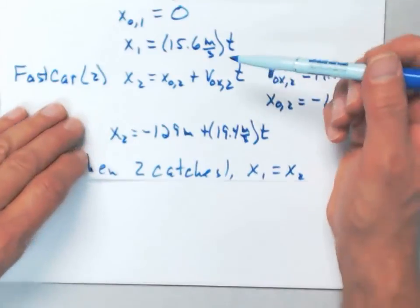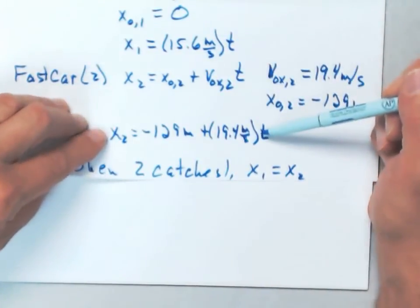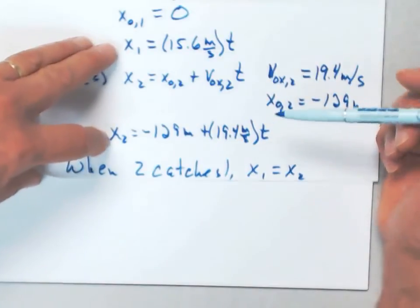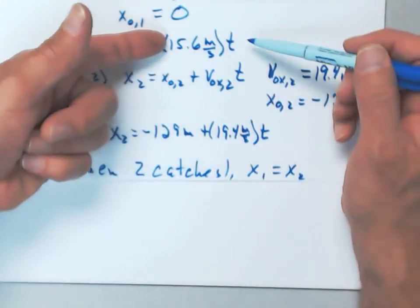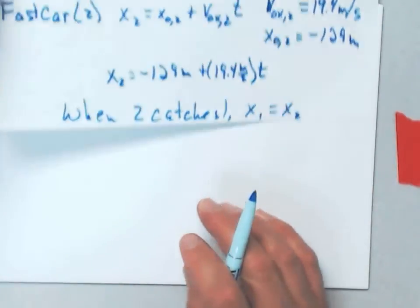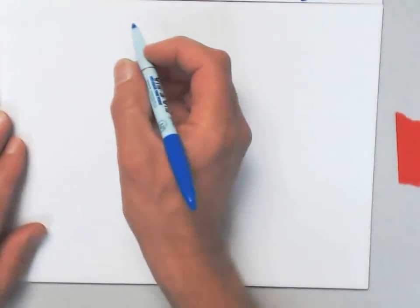So, we've got our equations for x1 and x2. If I just set these two equal to each other, replacing x1 with this, replacing x2 with this, we'll have a solution, or at least an equation we can solve.